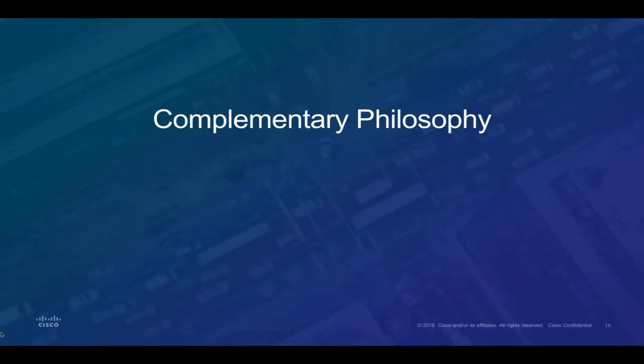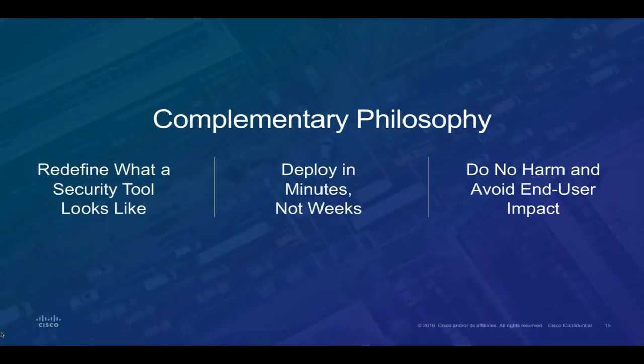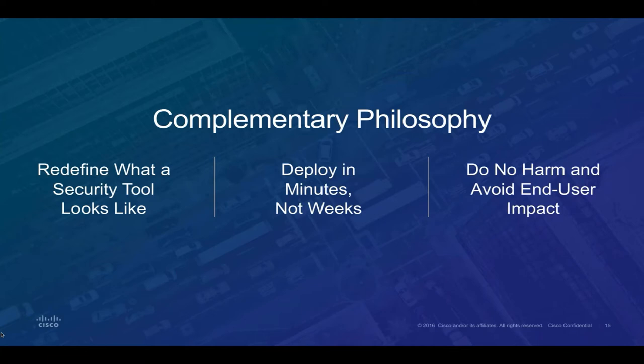The reason we're speaking today is that CloudLock and OpenDNS — now Cisco Umbrella — have extraordinarily complementary philosophies when it comes to redefining what a security tool looks like and feels like: that it doesn't have to be a physical box, and it doesn't have to be a painful process to deploy or to operationalize. Organizations are increasingly resource-strapped in their IT and security departments, and we don't want to introduce burdensome, complex tools that take months to deploy with steep learning curves.